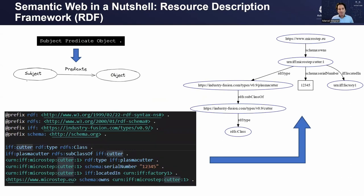The key ingredient of semantic web is the Resource Description Framework (RDF). It starts very simply — everything is a subject, a predicate, an object. Subject and object are nodes, and the predicate is the link between them. Taking this triple structure, you can define arbitrarily complex graphs. You can combine typing — for instance, plasma cutters are derived from cutters — and describe other things like serial numbers or where the machine is located. You can define pretty complex knowledge trees and models of your environment.